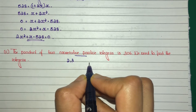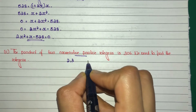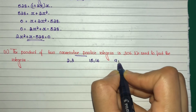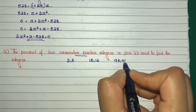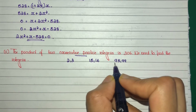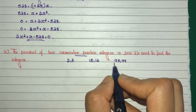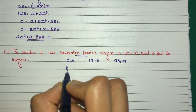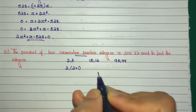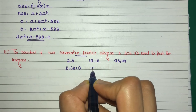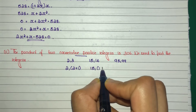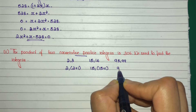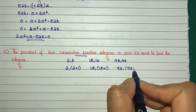Consecutive positive integers are numbers such as 2 and 3, or 15 and 16, or 98 and 99. Notice that if the first number is n, the next consecutive integer is n plus 1. For example, 2 and 2 plus 1, or 15 and 15 plus 1 equals 16, or 98 and 98 plus 1.